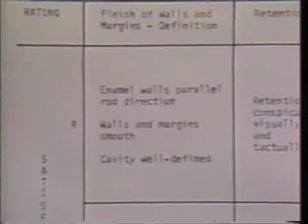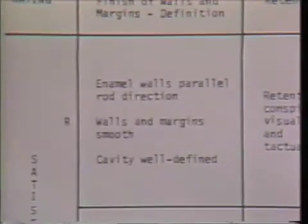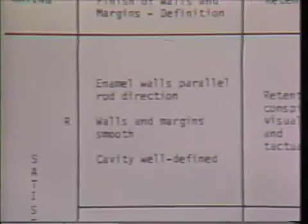Under each of the essential characteristics that head the four vertical columns, brief phrases describe possible observations that aid in defining, operationally, the traits used to rate the quality of that particular attribute of the prepared cavity. Each characteristic should be viewed independently. The evaluator, for example, observes the finish of walls and margins definition of the prepared cavity and asks him or herself: Do enamel walls parallel enamel rod direction? Are walls and margins smooth? Is the cavity well defined? Checks can be made for those answered yes. If all are answered yes, that characteristic is rated Romeo — all standards of excellence have been met — and the evaluator proceeds to the second column of the characteristics, retention.